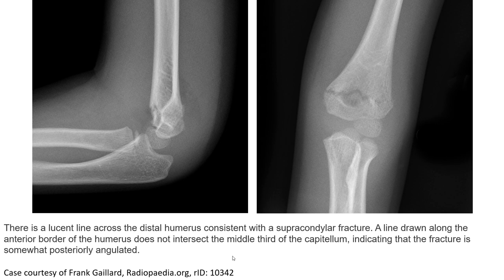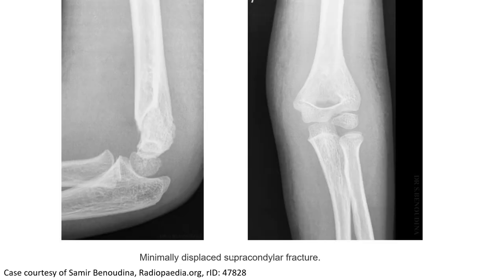Consistent with a supracondylar fracture, a line drawn along the anterior border of the humerus does not intersect the middle surface of the capitellum, indicating that the fracture is posteriorly angulated. This AP and lateral elbow X-ray shows a minimally displaced supracondylar fracture.